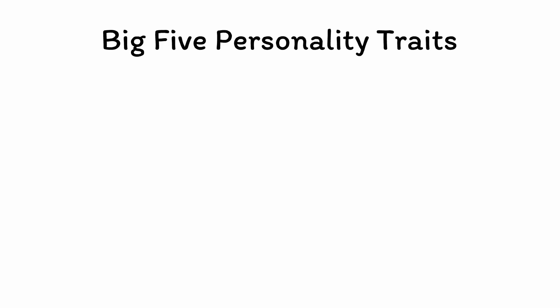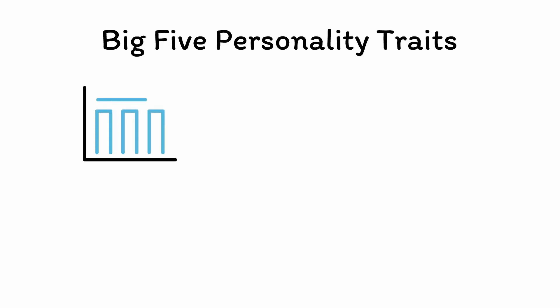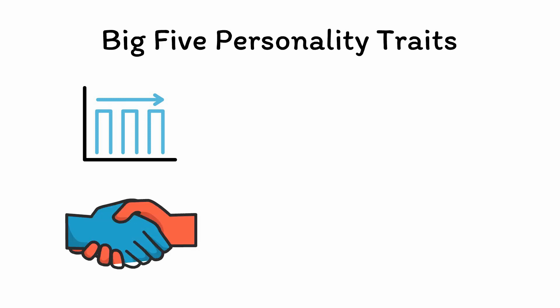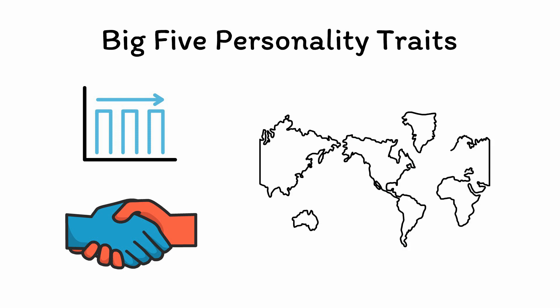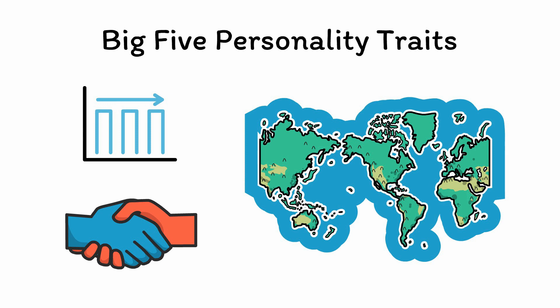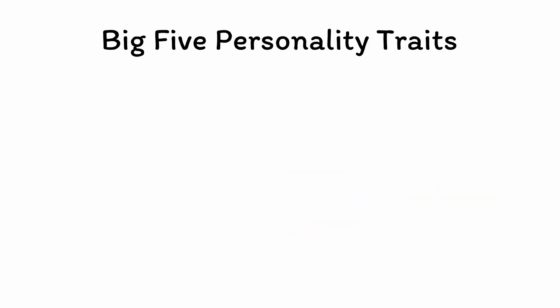These traits have been shown in multiple studies to be both reliable, meaning that they're stable over time and stay consistent from childhood through adulthood and even into old age, as well as valid, meaning that someone's self-assessment of these traits generally agrees with reports from outside observers like family or friends. These traits have also been observed in different cultures around the world, suggesting that they are universal patterns which are inherent to humanity and not just reflective of any one particular society.